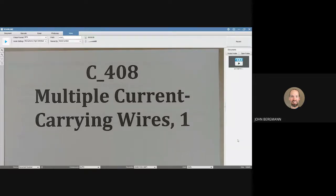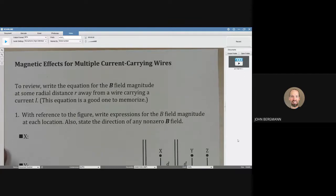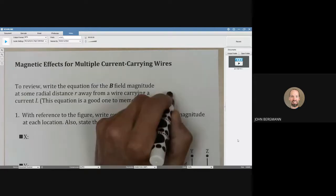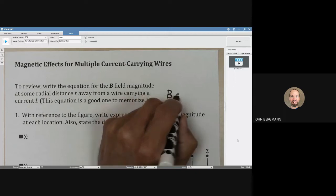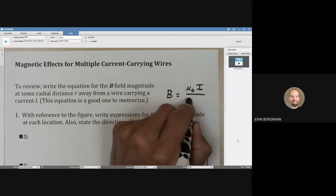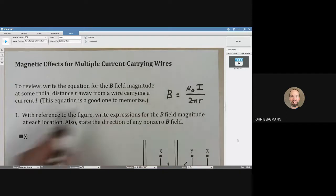Multiple current-carrying wires. To review, write the equation for the magnetic field magnitude at some radial distance r away from a wire carrying a current i. We have seen this equation many times before. We derived it using Ampere's law, but there it is.